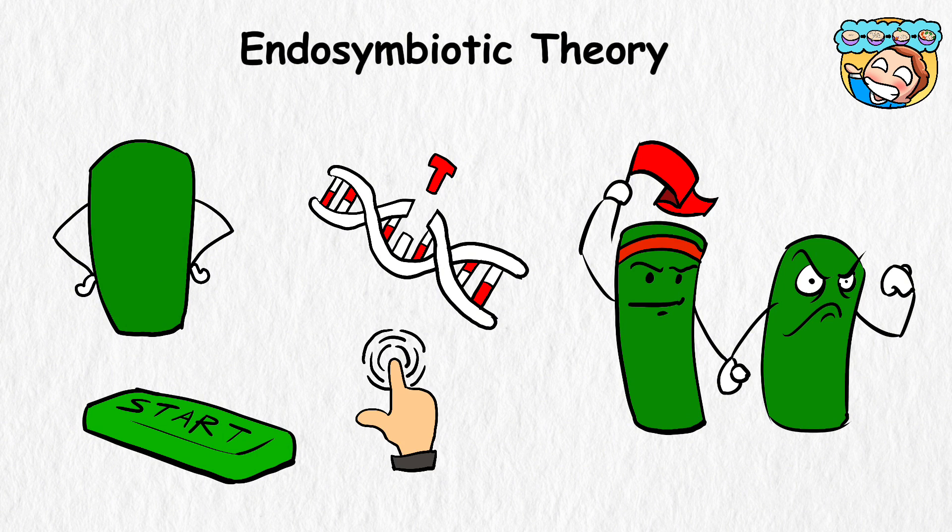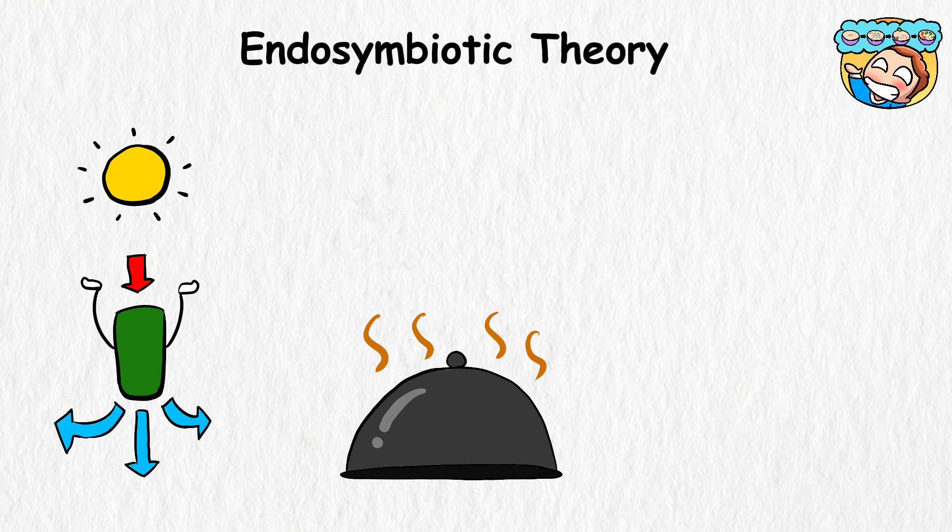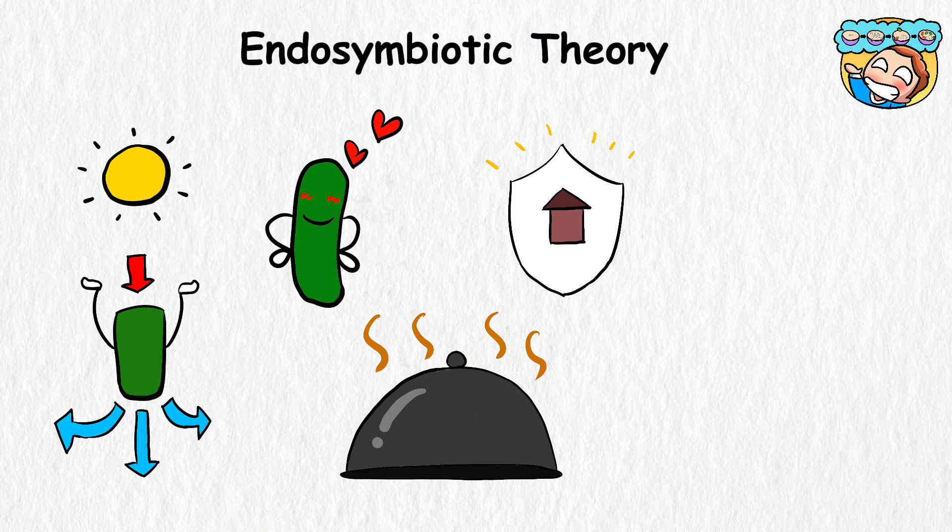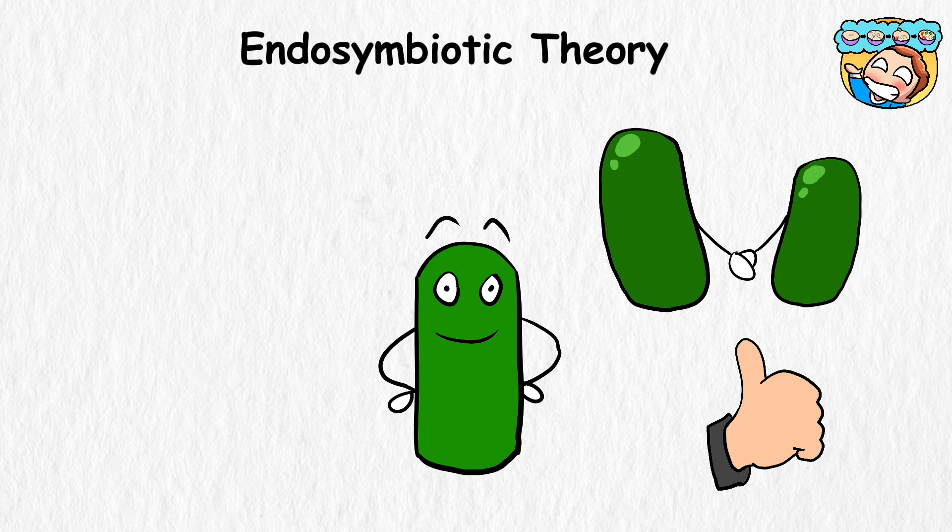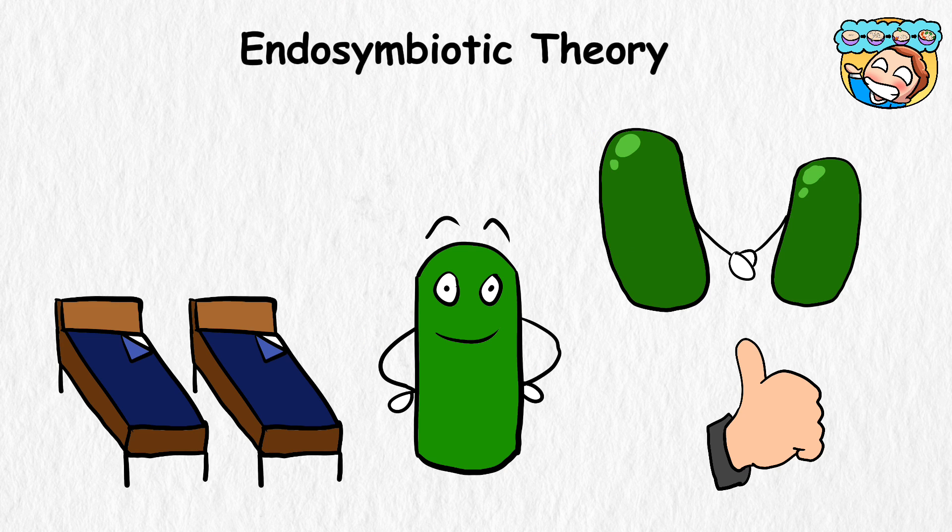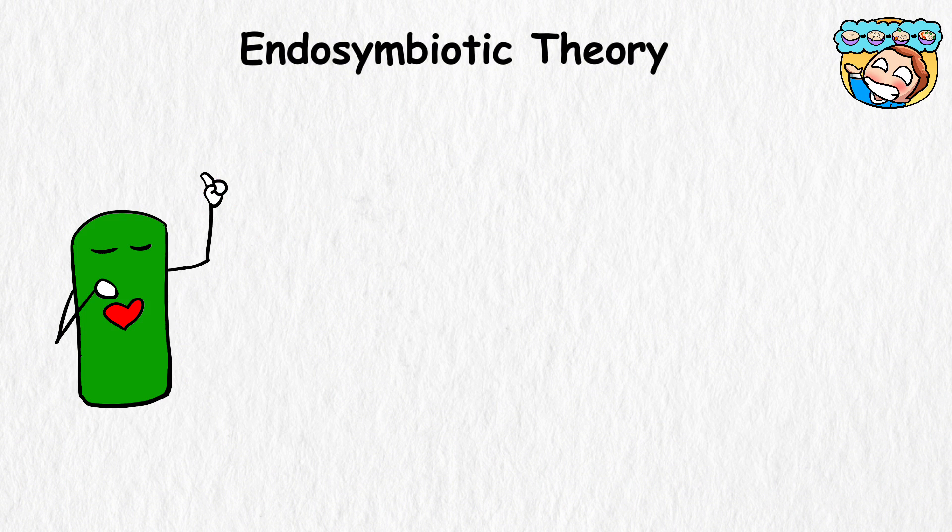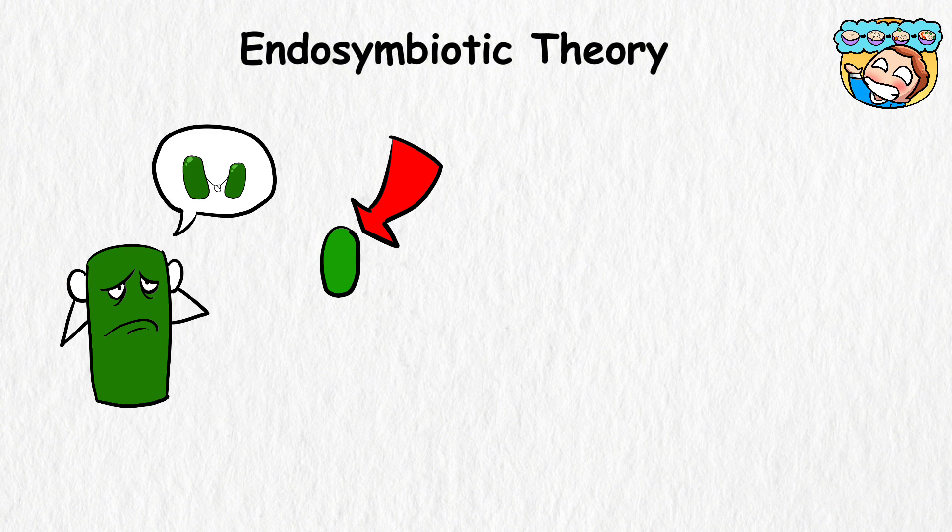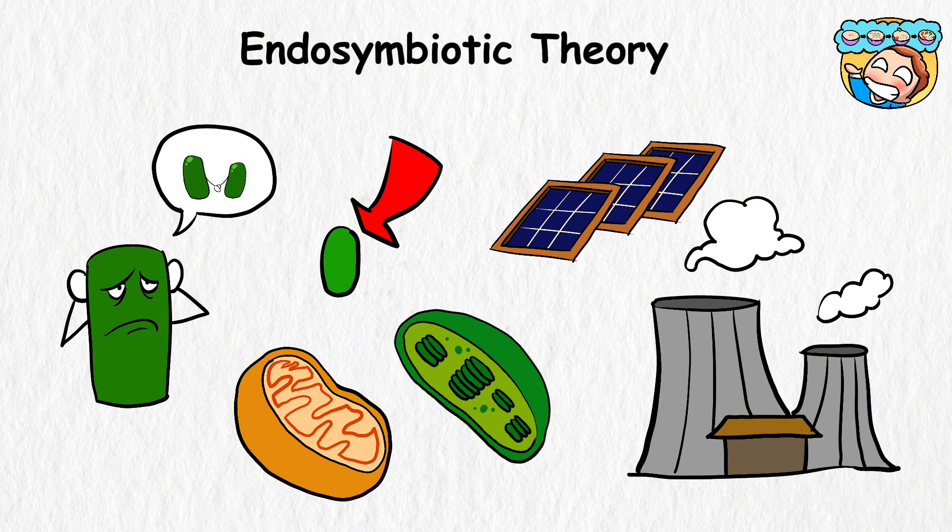This was the start of a revolutionary partnership that may have contributed to evolution. The big cell got to use the tiny cell's super cool photosynthesis skills, which helped make food from sunlight. The tiny cell liked having a safe place to live inside the big cell. They figured that living together was better than going solo. This roommate arrangement became more than just convenient, but a deeper partnership that made it impossible for the cells to live without each other. The tiny cell became the mitochondria and chloroplasts, which are like the power plants and solar panels of cells.